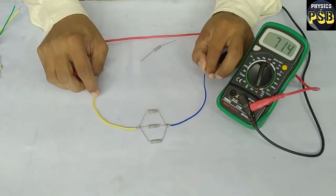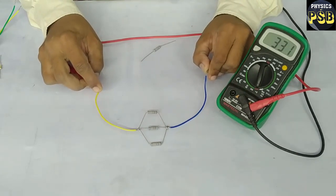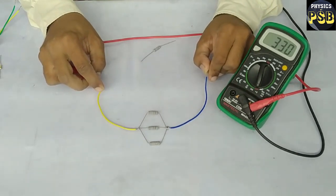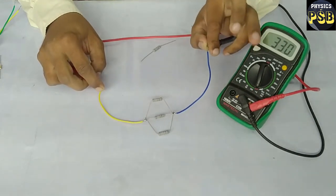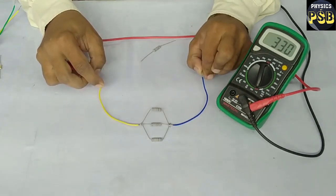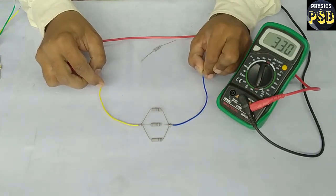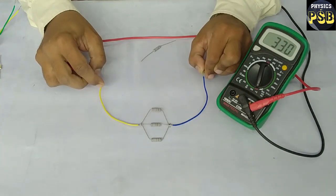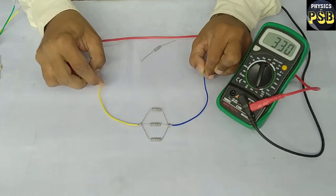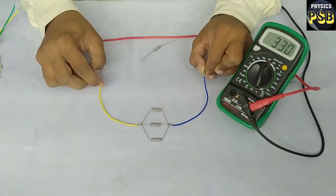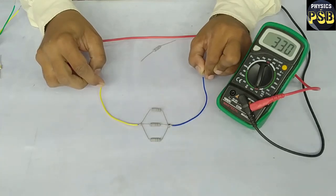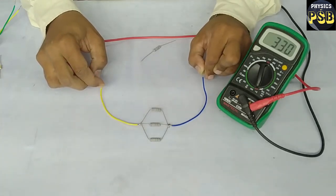Now I will check the resistance of these resistors connected in parallel combination. Look at here carefully. The resistance of the individual resistor is 1000 ohms, but when they are connected in parallel, the resistance has reduced to 330 ohms. This shows that when we connect resistors in parallel combination, the total resistance decreases.